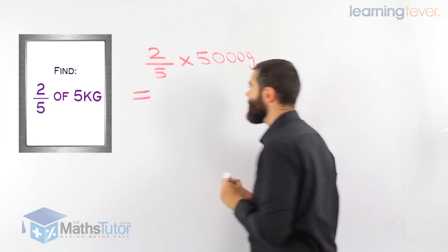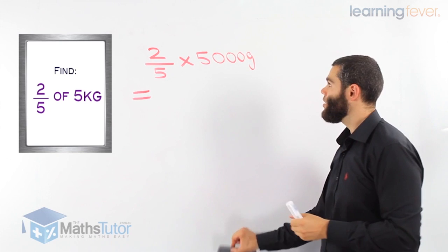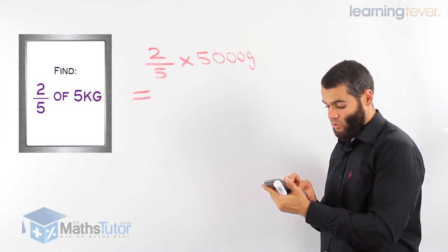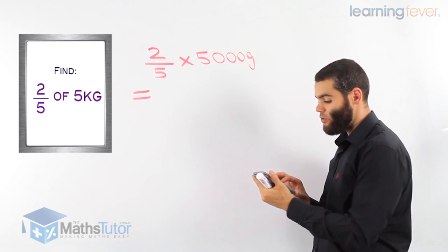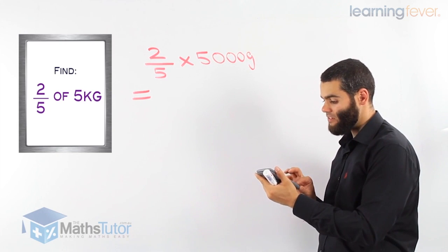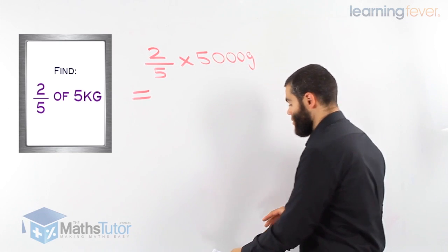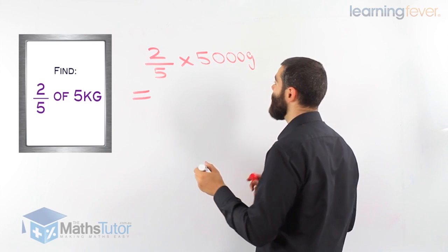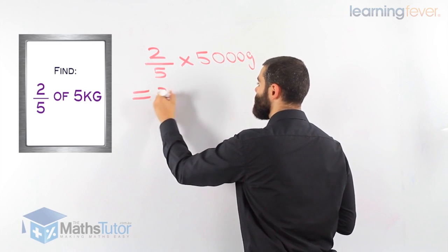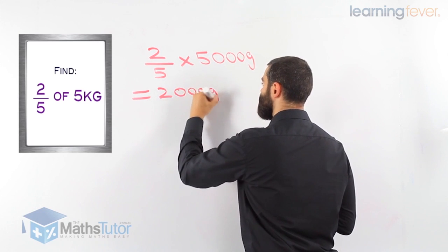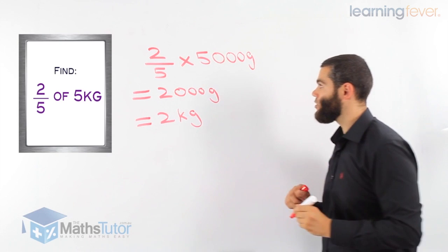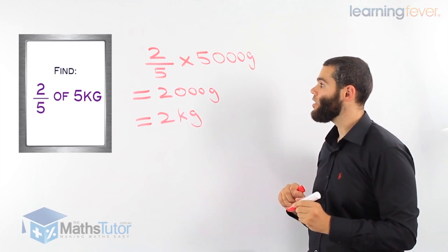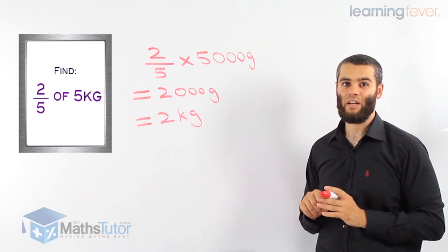Now, I always say grab your calculator and do them with me. Let's do it together. Two divided by five, or two over five, times 5,000. Two-fifths of 5,000 grams is 2,000 grams, which is the same as 2 kilograms. So two-fifths of 5 kilograms is 2 kilograms. It is that easy.